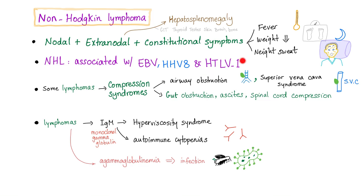We have talked about this before when we discussed human T-cell leukemia. Some lymphomas will cause compression syndromes — they will press on local structures, leading to airway obstruction or superior vena cava syndrome if they are up in the mediastinum. If they are lower, they can cause gut obstruction, ascites, or maybe spinal cord compression.